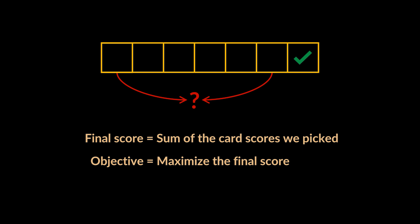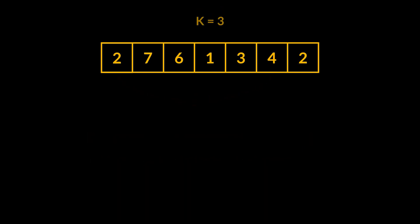To better understand this problem, let's visualize it and take the array of points you see in front of you alongside K equals 3.